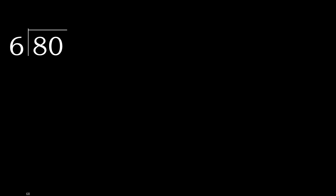80 divided by 6. 8 is not less, so we work with 8. 6 multiplied by which number is nearest to 8 but not greater? 6 multiplied by 1 is 6 — it's not greater. 6 multiplied by 2 is 12 — it's greater. So we use 1.